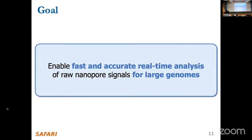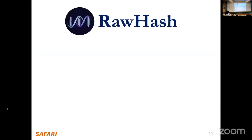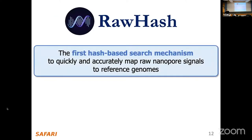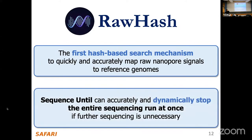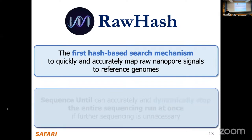In this work, our goal is to enable fast and accurate real-time analysis of raw nanopore signals for large genomes. We propose RawHash and make two key contributions: first, the first hash-based search mechanism to quickly and accurately map raw nanopore signals to reference genomes; second, a technique called sequence-until that can accurately and dynamically stop the entire sequencing run at once if further sequencing is unnecessary.